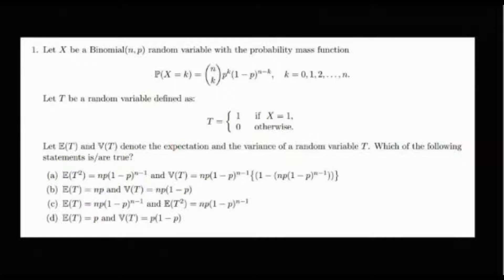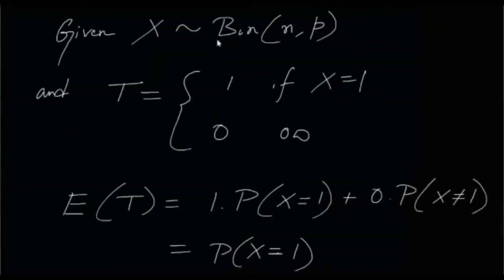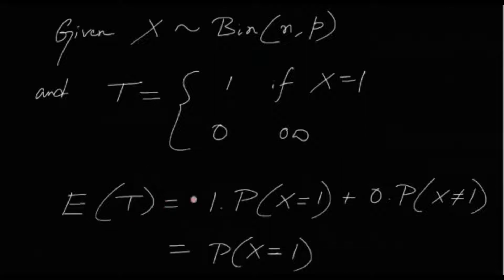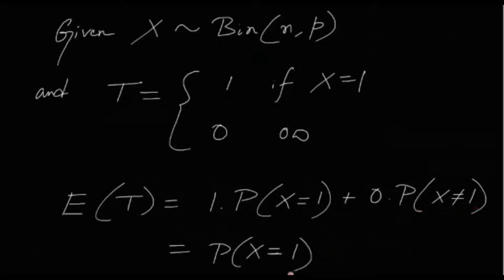T is an indicator random variable — it takes value 1 if X = 1 and 0 if X ≠ 1. The expectation of T is: E(T) = 1 · P(X=1) + 0 · P(X≠1), which simplifies to just P(X = 1).